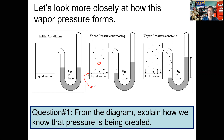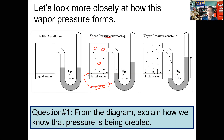As evaporation occurs, the particles go from the liquid state into the gaseous state. As a result of the gases forming up here, we see the pressure begins to form. When we talk about vapor pressure, it is the pressure exerted by the vapors — the gas particles that are above the liquid — and the vapor pressure is a result of evaporation of the liquid.